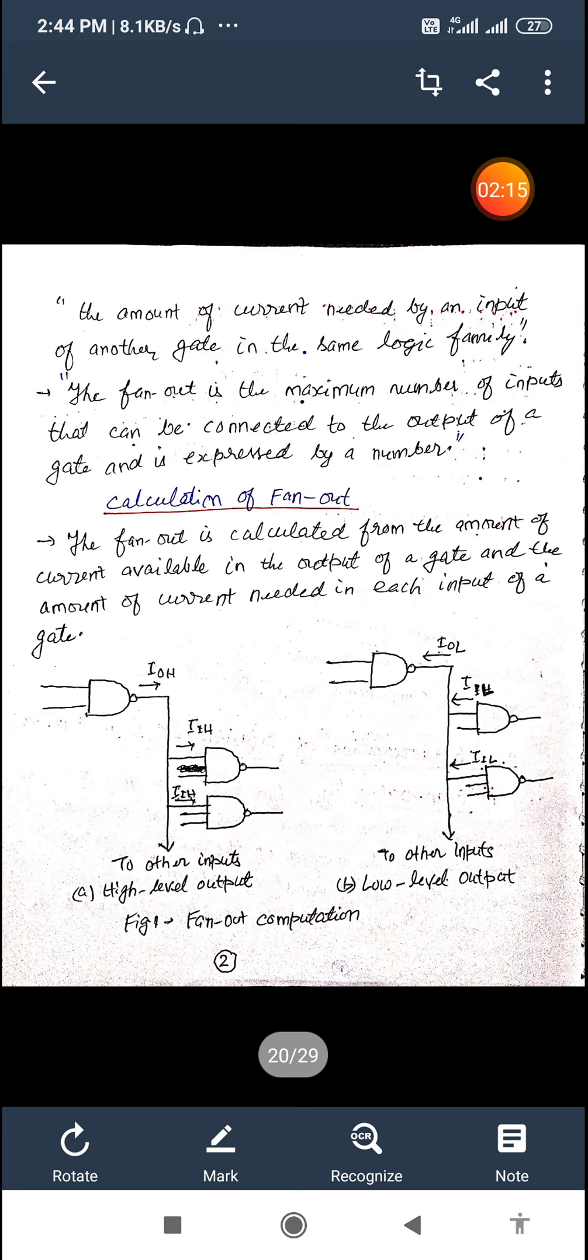In the figure we can say that the output of one gate is connected to one or more inputs of other gates. The output of the gate is in the high voltage level in figure 1A which provides a current source IOH to all the gate inputs connected to it. Each gate input requires a current IIH input current for higher level for proper operation.